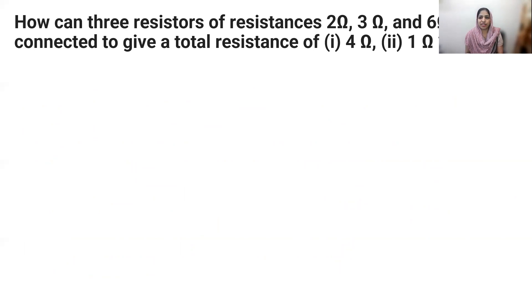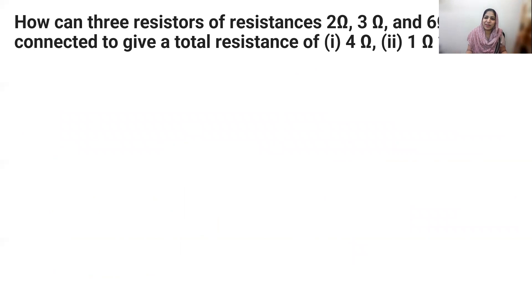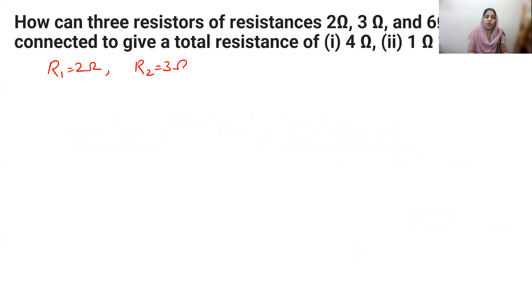How can three resistors of resistances 2 ohm, 3 ohm, and 6 ohm be connected to give a total resistance of 4 ohm? We need to check: 4 ohm is between the smallest and largest resistor values. If it were less than all resistors we'd connect everything in parallel; if greater than all, everything in series. Here 4 ohm is between 2 ohm and 6 ohm.